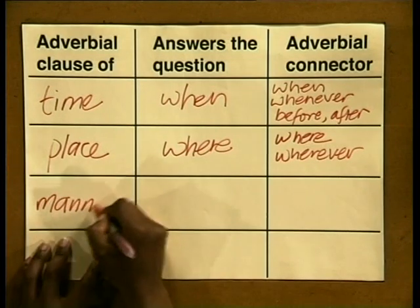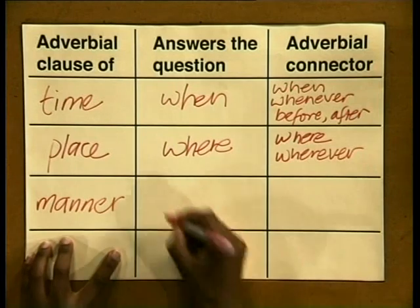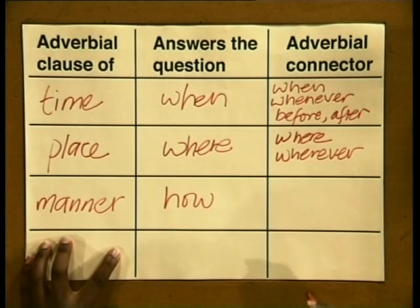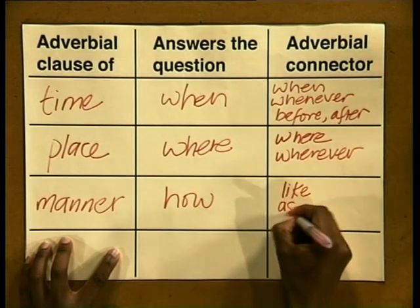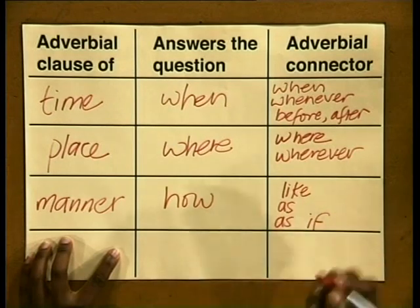The next type of adverbial subordinate clause is that of manner. Manner refers to the way in which something is done. It answers the question 'how,' and it's introduced by the words: like, as, or as if. Here's a sentence in which the manner of the verb is described: 'I go to school as if I am sleepwalking.' The words 'as if' indicate that a comparison is going to follow to describe the way in which I go to school. So 'as if I am sleepwalking' is the adverbial clause of manner.